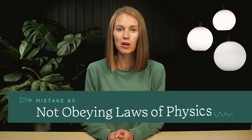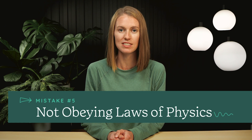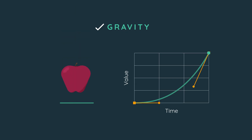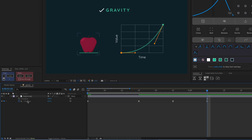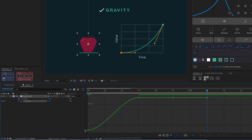Mistake number 5 is not obeying the laws of physics. When things fall, gravity accelerates them towards the ground. So don't just easy-ease those keyframes — the object will slow down before landing, which will look wrong, because it is. Instead, you'll need to go into the graph editor to adjust the motion curve.